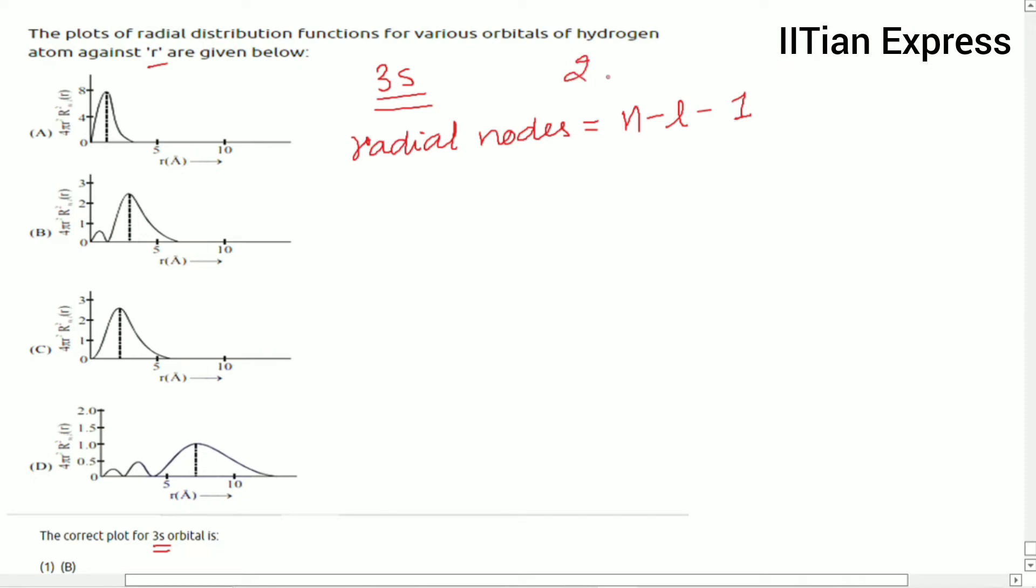Here n equals 3, actually n is 3 because this is 3s, and l equals 0 for s orbital.